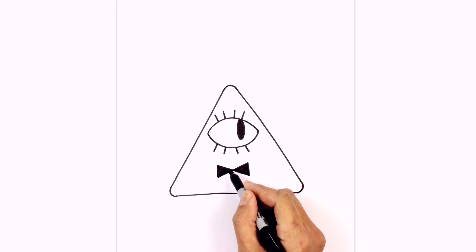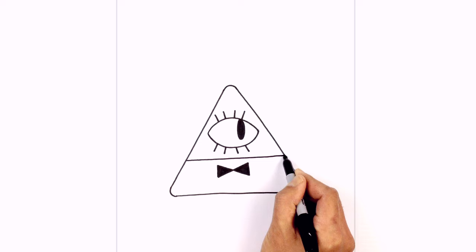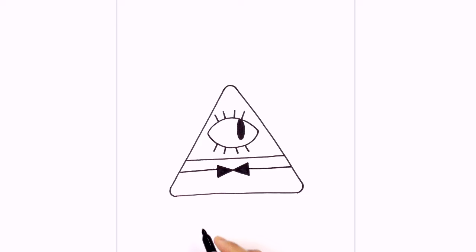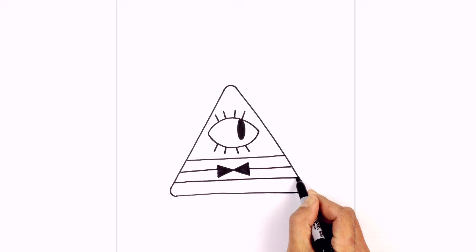Let's add in some brick texture in the lower part of the body. In between the eye and the bow tie we're going to draw a straight line going across from left to right. Now we're going to add two more lines in between — starting down on the left side going in towards the bow tie, continuing on the right side, and then drawing one more straight line going across just below the bow tie.